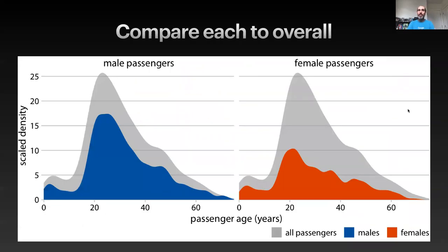Here's an example where instead of visualizing the male and female on top of each other, it visualizes the male and female separately but also provides the overall histogram of all passengers combined. That makes it easier to compare the distribution of any one dataset to the overall data distribution, and this kind of approach could scale to more than two distributions.